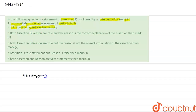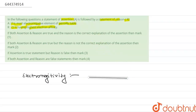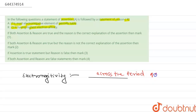First we will discuss about electronegativity. Electronegativity is a measure of an atom's ability to attract a shared pair of electrons. The trend of electronegativity across the period is that on moving from left to right, that is across the period, the electronegativity of an atom increases.